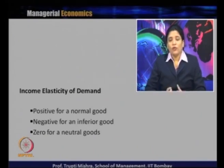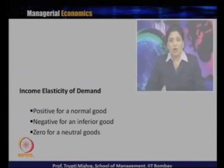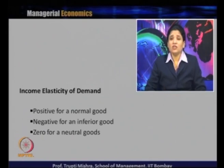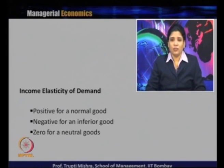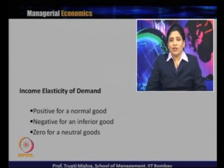How should we interpret this income elasticity of demand? We will get a value. If the value is positive, this is the case of a normal good. Why is it positive for a normal good? Because in real life, when there is an increase in income, that generally leads to an increase in consumption. In the case of normal goods, an increase in income generally leads to increased purchases.